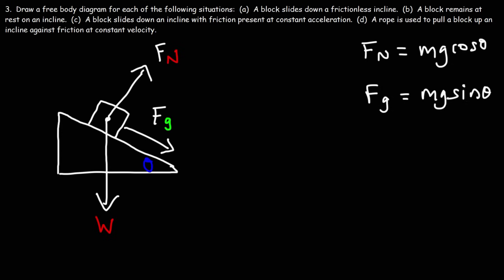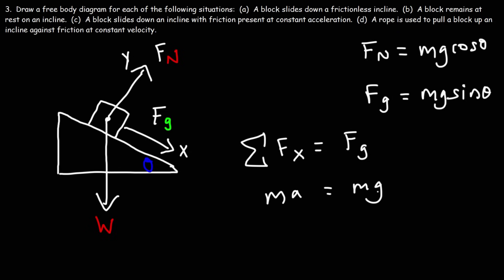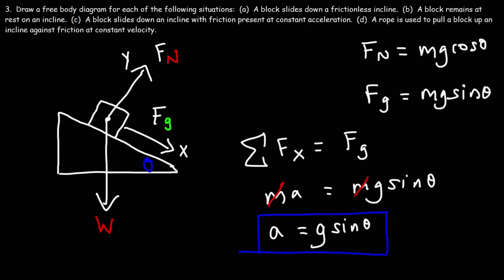To calculate that acceleration, we define the x-axis parallel to the incline. The sum of the forces in the x direction is Fg — the only force along the x-axis — which equals ma. Since Fg is mg sine theta, we can divide both sides by m. Therefore, the acceleration for this problem is simply g sine theta.